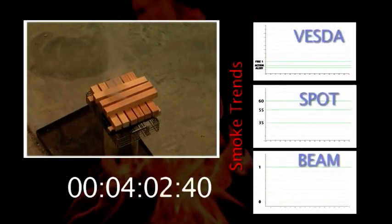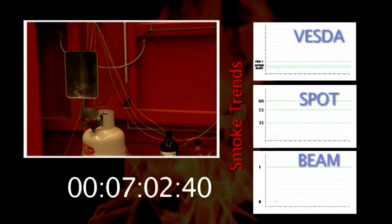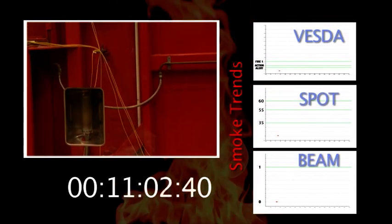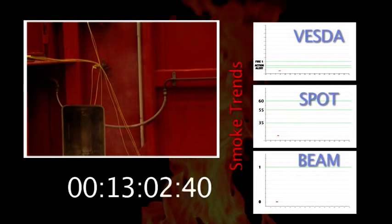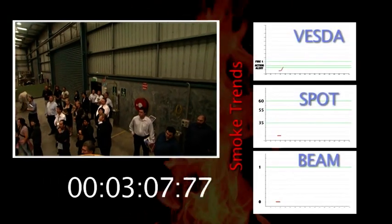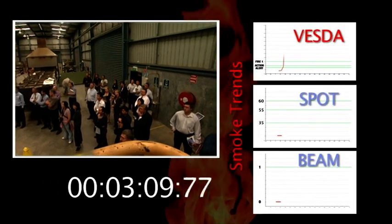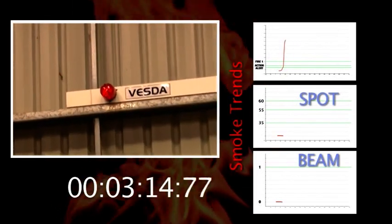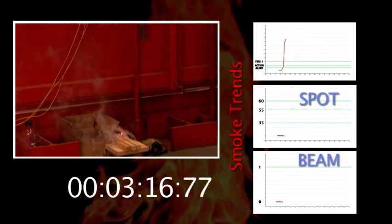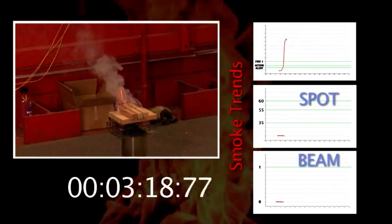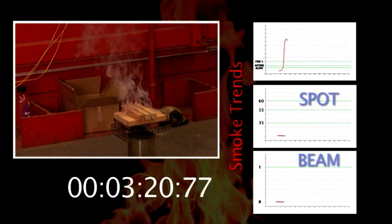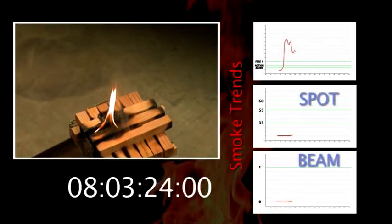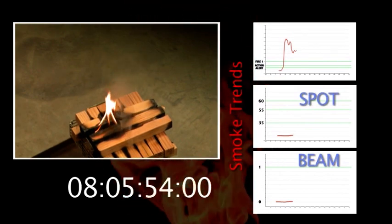The burning of the wood initially undergoes smoldering combustion that generates white smoke followed by flaming combustion with little visible smoke present. At three minutes, the VESDA detector has gone into alert and three minutes twelve seconds into fire alarm one. Meanwhile, as you can see, the fire is still very small and manageable. Eight minutes into the fire and still neither the point or beam detector have picked up the smoke. A clear win to the VESDA system.